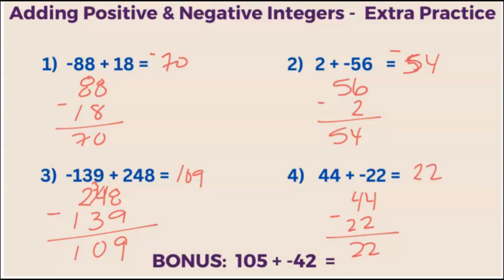44 has a higher absolute value than 22. And it's positive. So our answer will also be positive.